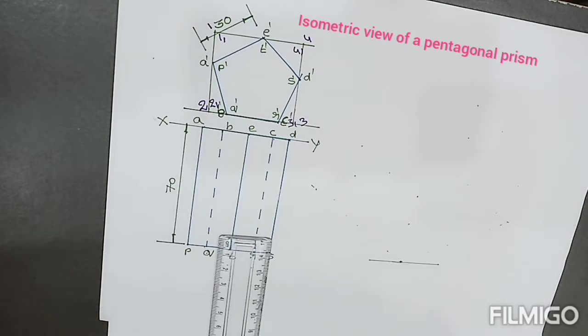Then after that, we have to copy this rectangle into isometric view. We have to construct rectangle 1, 2, 3, 4 and 1 prime, 2 prime, 3 prime, 4 prime in isometric views.